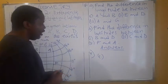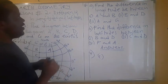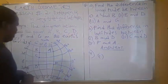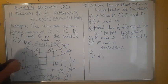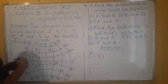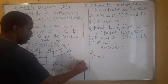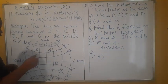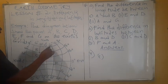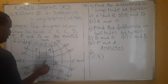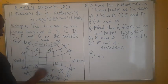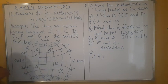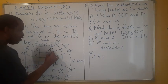For number one, we find the difference in longitude between A and B. Looking at point A — note that this side is East and this is West. The longitude of A is 30 degrees East, because from the zero meridian you're going to the East. From the equator going upward is North and downward is South.